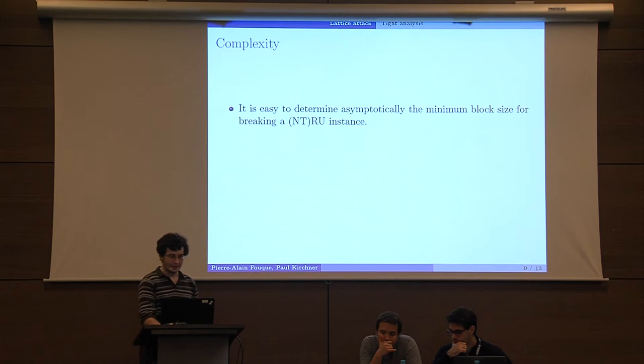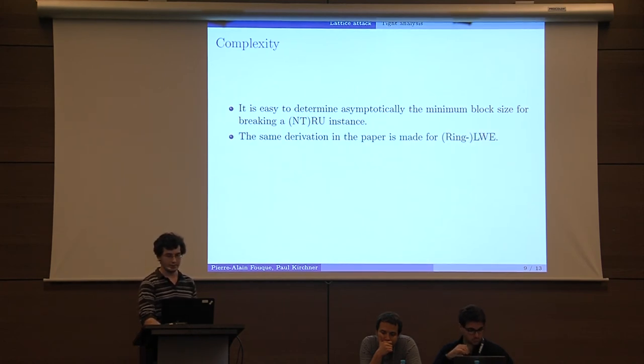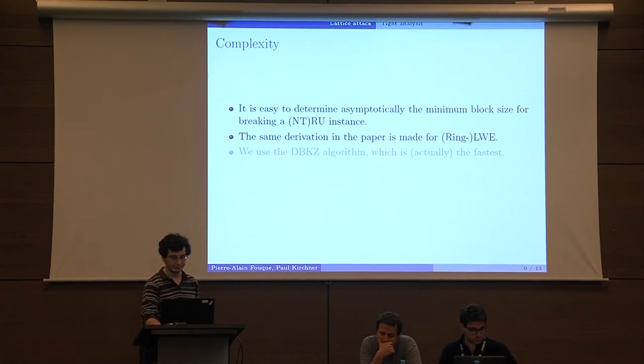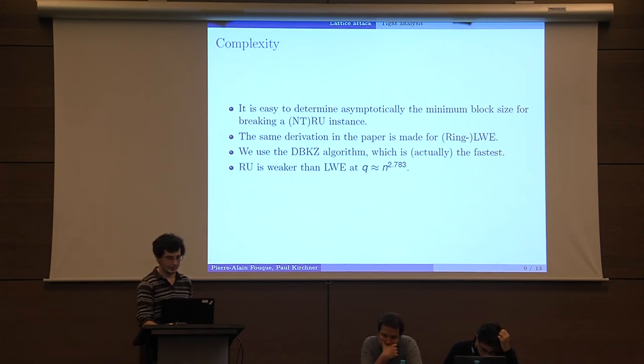So it's very easy to determine asymptotically the minimum block size for defeating NTRU instances. We make the same derivation in the paper for LWE also, ring equivalent, and we use the dual BKZ algorithm, which is the fastest today.